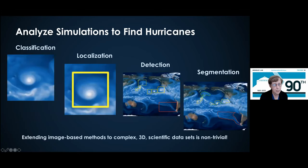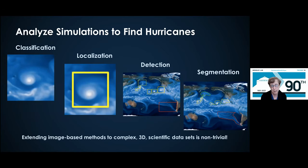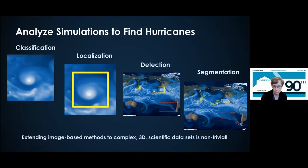What about science? We're not really interested in finding cat videos here at Berkeley Lab, but we are interested in understanding climate change. We use much more complicated data than images — what looks like an image in my slide is actually three-dimensional simulation data of climate change. We're looking for things like extreme climate events such as hurricanes. We can ask: is there a cyclone or hurricane, where is it, how many are there, and what are their boundaries? The scientists here at the lab have extended these machine learning algorithms to look at these kinds of problems on much more complicated scientific data from simulations.